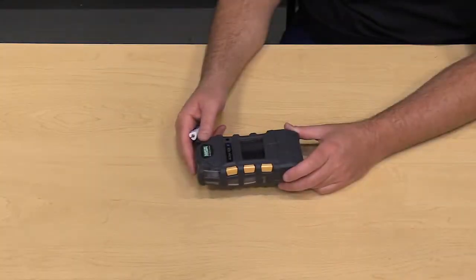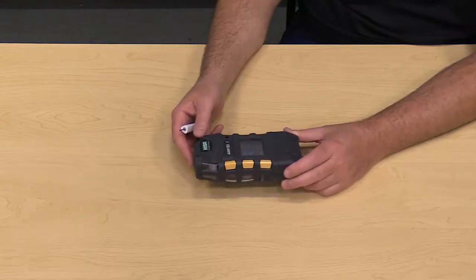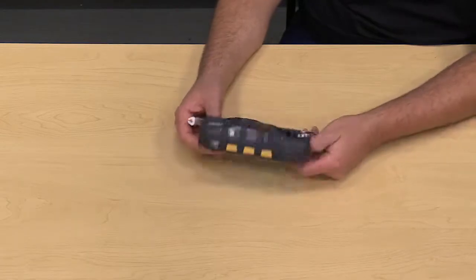We're going to take a moment to show you how to change a sensor on the Altair 5X gas detector. To start out, the gas detector should be turned off.